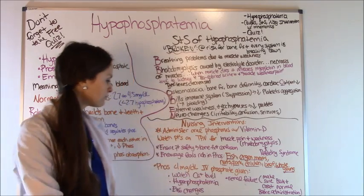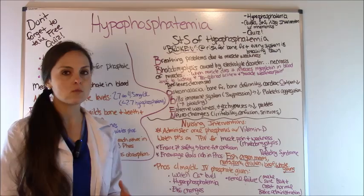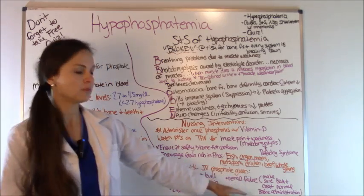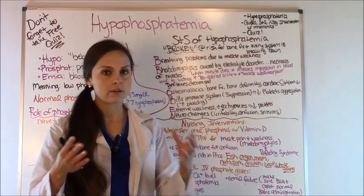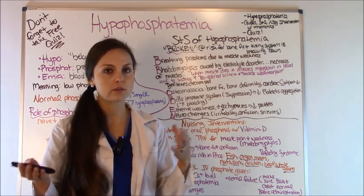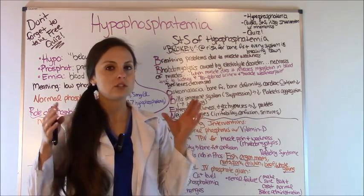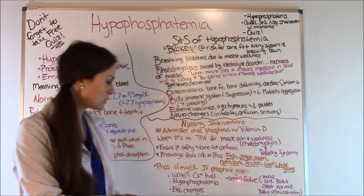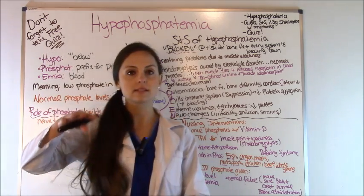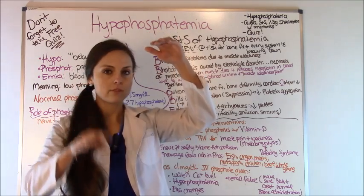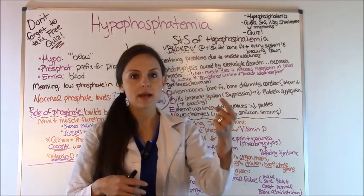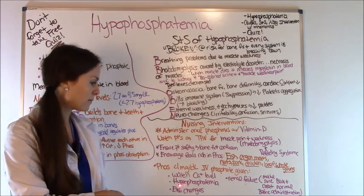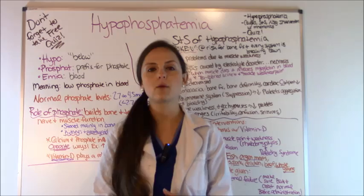If phosphate levels are less than 1 mg/dL, the physician may order IV phosphate. Before giving it, make sure the patient's renal status is good — check BUN and creatinine — because patients in renal failure cannot clear phosphate and you don't want to give them phosphorus. Watch the calcium level too, since increasing phosphate can decrease calcium, so monitor for signs of hypocalcemia. Also monitor phosphate levels closely to avoid causing hyperphosphatemia, and watch for EKG changes with cardiac monitoring.